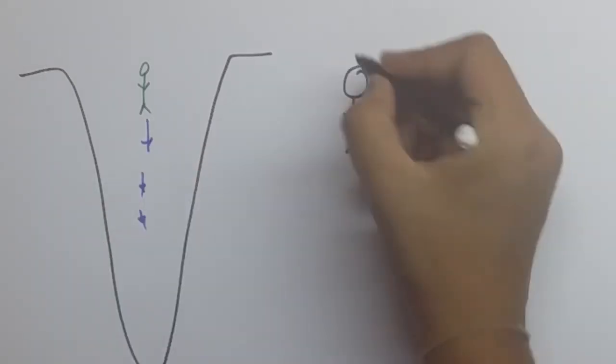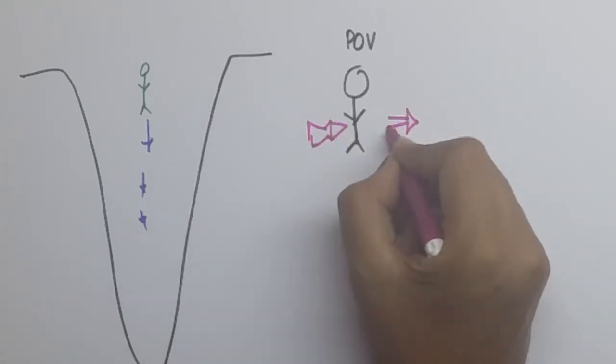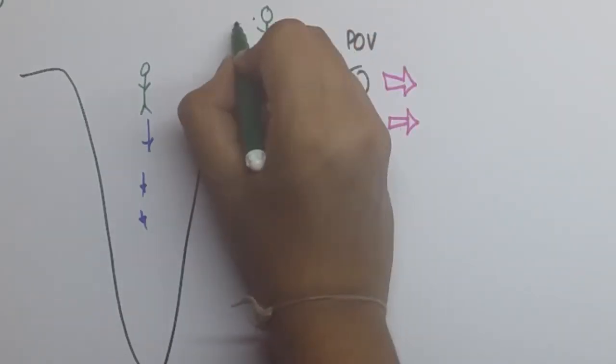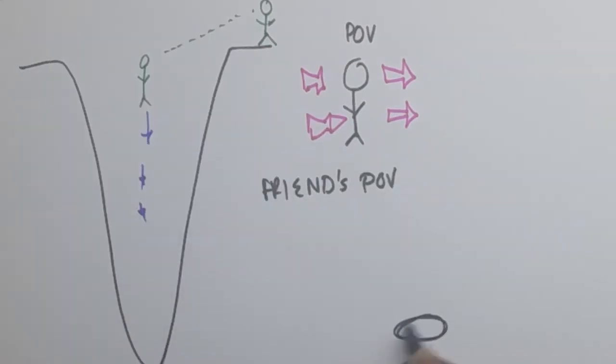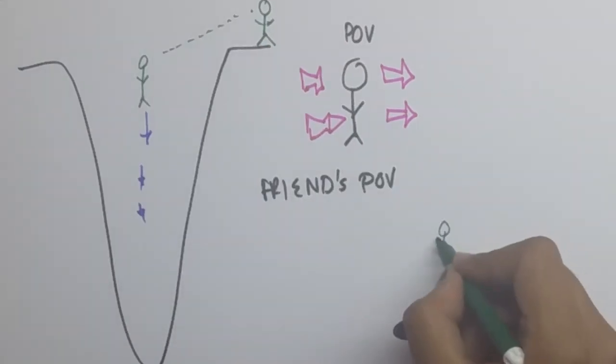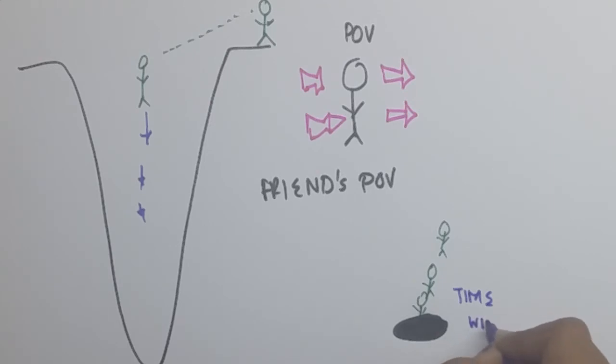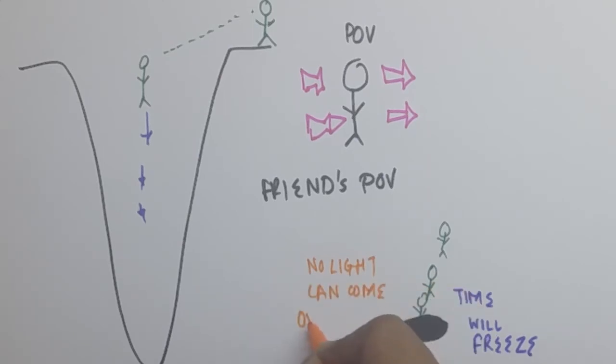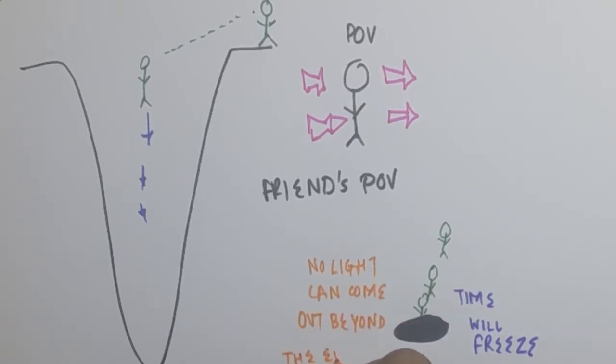Say you have a friend who's near the black hole. He will see you gradually going towards the black hole until you finally freeze near the event horizon. This is because the light from you will not be able to reach the eyes of your friend, and for that friend, you will forever be frozen at the event horizon.